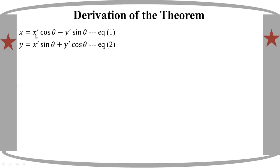We have: x equal to H prime cos theta minus 1 prime sin theta, and y equal to H prime sin theta plus 1 prime cos theta.